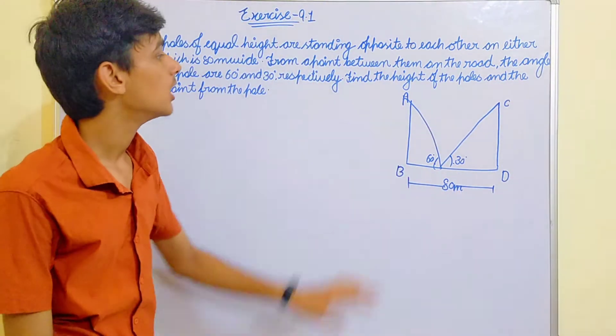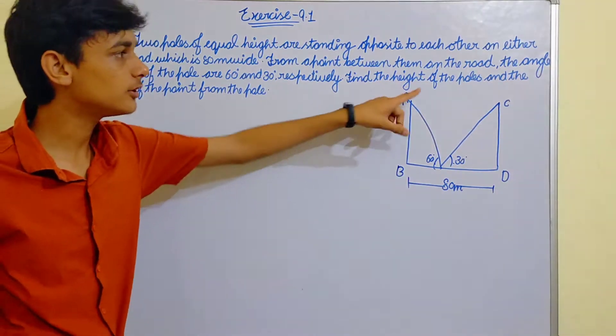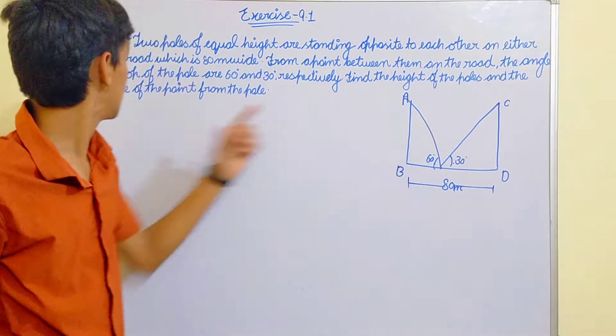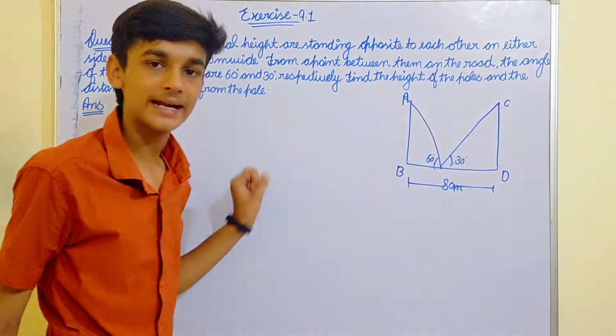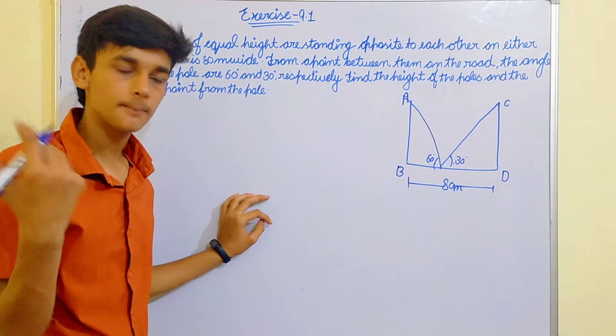If I am in the middle of the road, then these two angles would be equal. Now there is one big and one small angle, so we have to put the point a little bit far from the mid point. Now find out the height of the poles and the distance between the pole and the point.